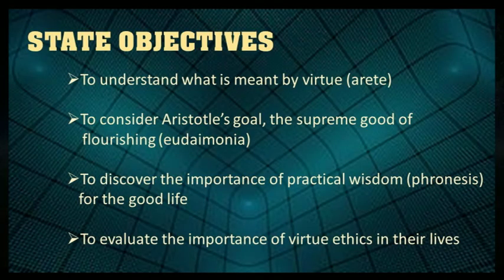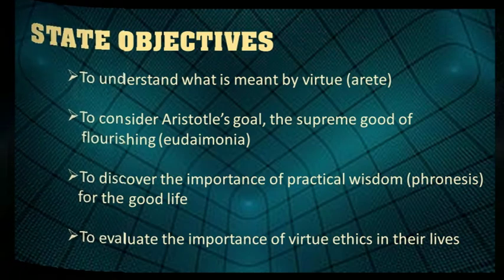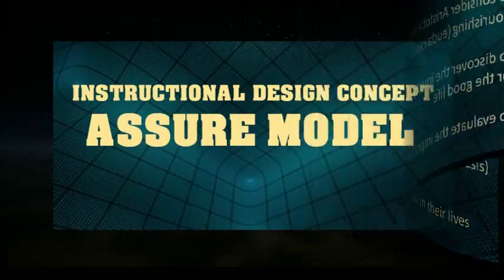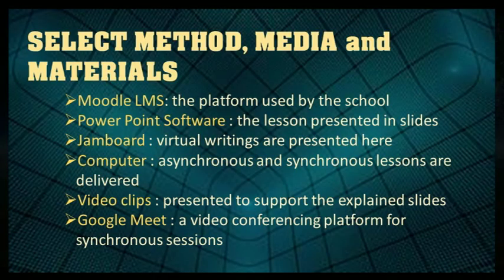The objectives are: first, to understand what is meant by virtue or arete; second, to consider Aristotle's goal — the supreme good of flourishing, eudaimonia; third, to discover the importance of practical wisdom, phronesis, for the good life; and fourth, to evaluate the importance of virtue ethics in our lives.